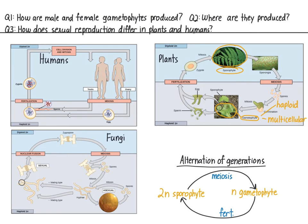One generation of the organism is spent as a sporophyte. The offspring of this organism is the haploid gametophyte. The offspring of the gametophyte is the diploid sporophyte. So each generation of plant alternates between haploid and diploid. Note that both haploid and diploid forms of the plant are multicellular. In some plants, like ferns, the multicellular gametophyte is visible to the naked eye.